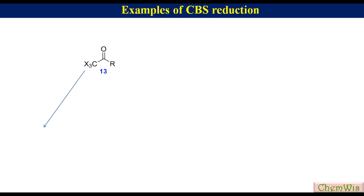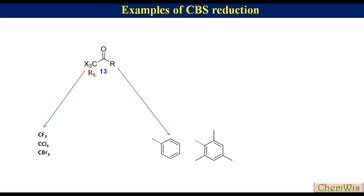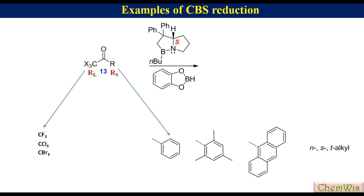In the case of trihalomethyl ketones where CX3 is CF3, CCl3, or CBr3, the CX3 group behaves as the large group, and R — which can be phenyl, substituted phenyl, anthracenyl, or primary, secondary, or tertiary alkyl — behaves as the small group. Thus, reaction of this ketone with catechol borane in the presence of S-CBS catalyst will allow the attack of hydride ion from the top face, affording this enantiomer as the major product.